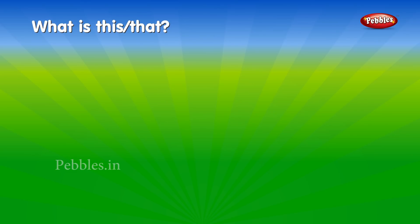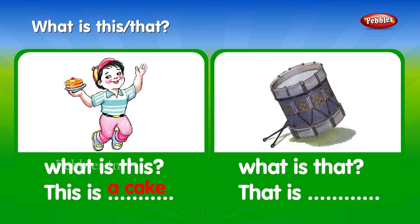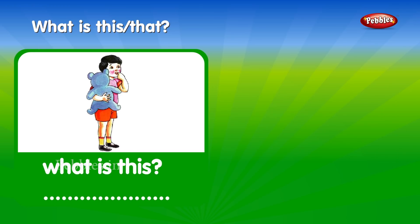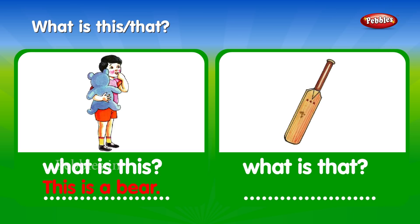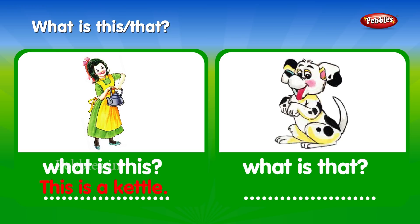This is, that is. What is this? This is ___. A kite. What is that? That is ___. A drum. What is this? This is a bear. What is that? That is a bear. What is this? This is a kettle.